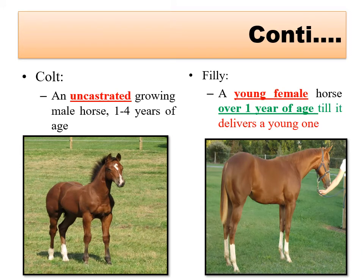Colt and filly are the growing male and female of horse. A colt is an uncastrated growing male horse having age between one to four years. A filly is a young female horse over one year of age until it delivers a young one for the first time - similar to a heifer in cattle.